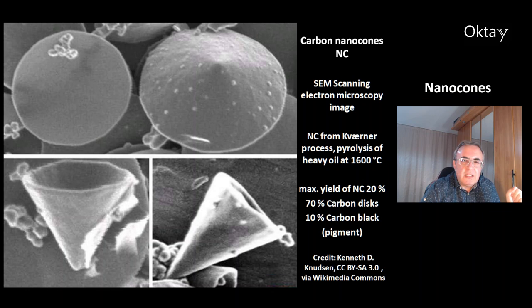One way to make nanocones is by the Cuerna process, which is a pyrolysis of heavy oil at 1600 degrees Celsius. Maximum yield of the nanocones is about 20%. Then you get 70% carbon disks and 10% carbon black, which is a pigment.